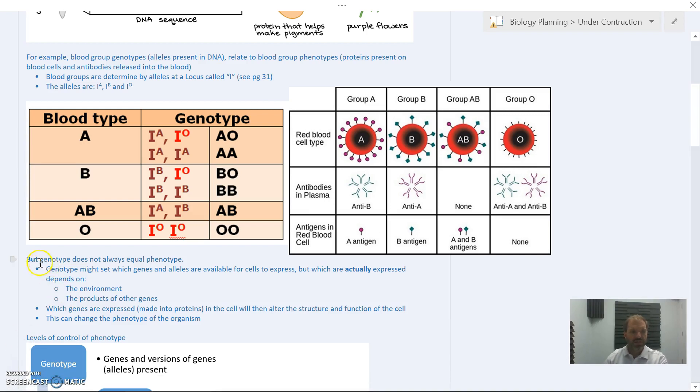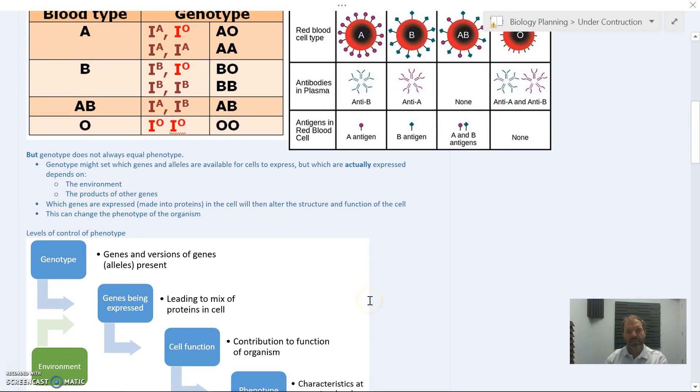In many cases, genotype does not always equal phenotype, because even though we might have different genes present, there's also an environmental influence on whether those genes are turned on or off. Genotype might set which genes are available, but which are actually expressed depends on the environment and the products of other genes.